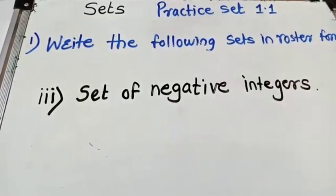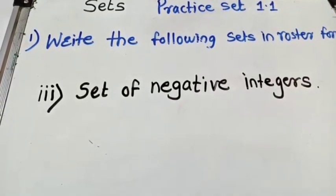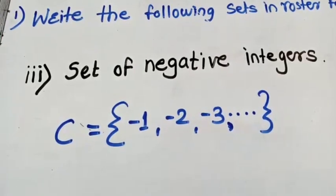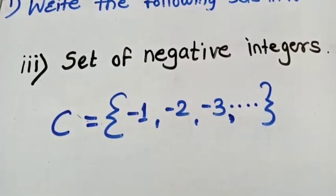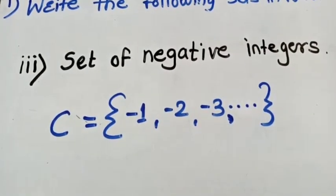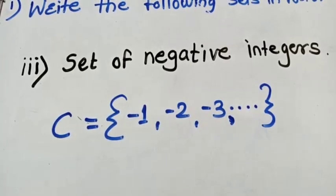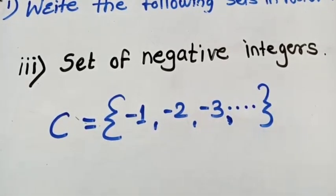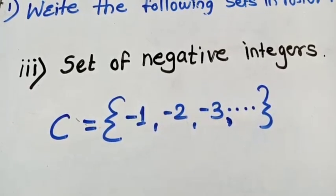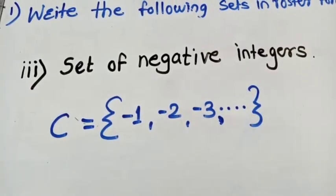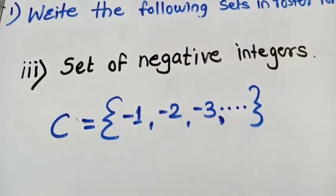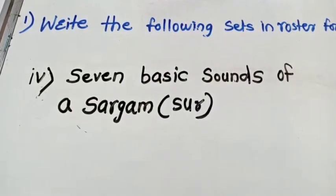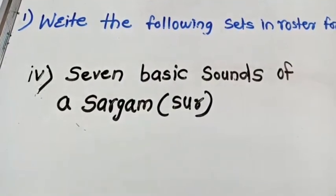Next example: set of negative integers. In roster form, C is a set of negative integers written as {-1, -2, -3, ...}. You have to write only negative integers here — it is simple.